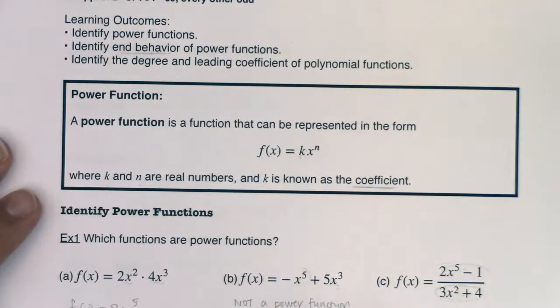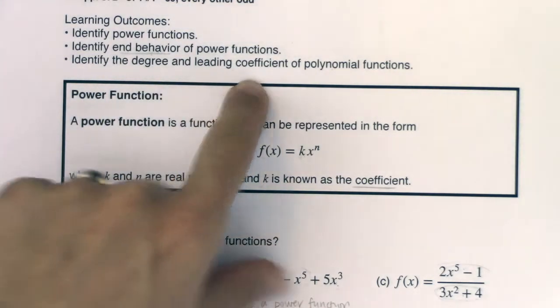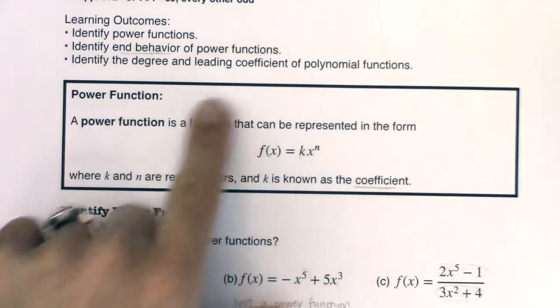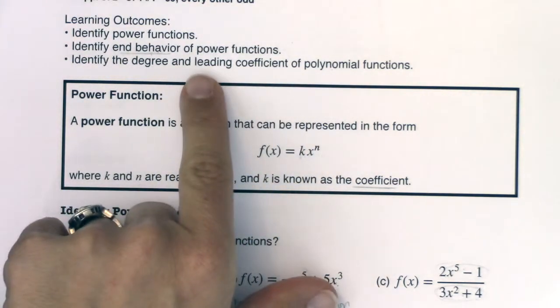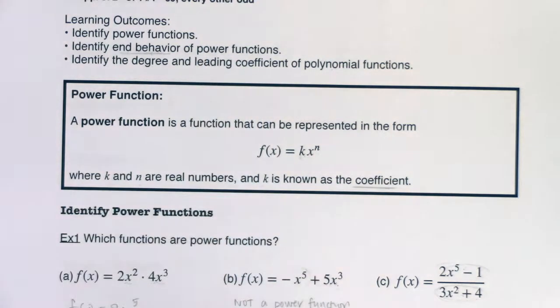And polynomial functions, they're when we're adding or subtracting multiple power functions. And that lead term always determines the end behavior of your polynomial function. So we want to be able to identify the degree and the leading coefficient of polynomial functions. Because whatever that term is, whatever that power function that is the lead term, that's going to regulate a whole bunch of traits for us.